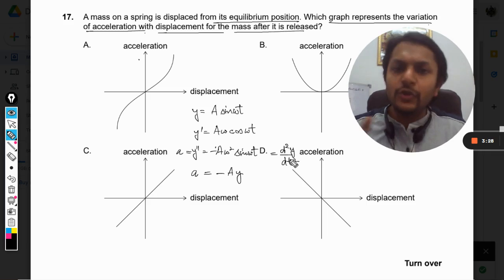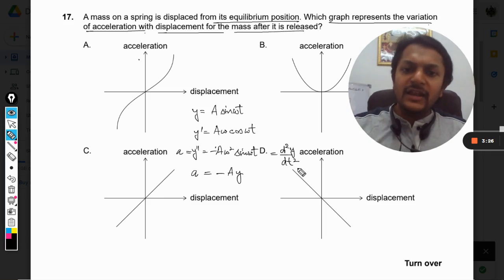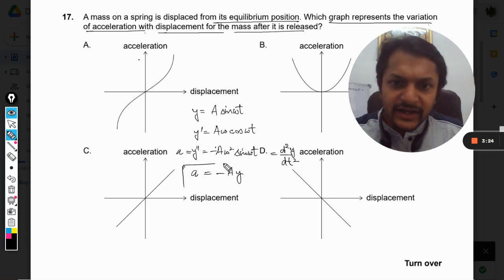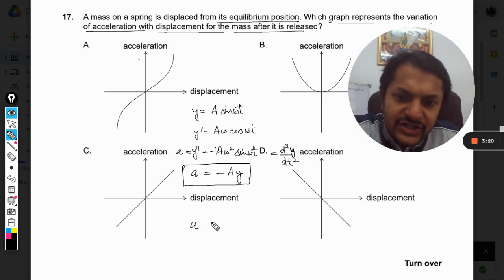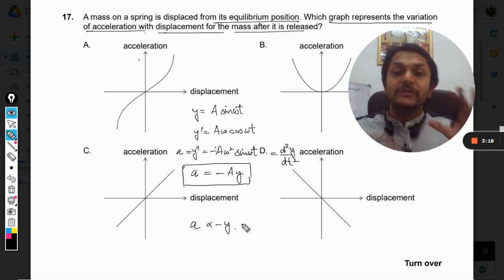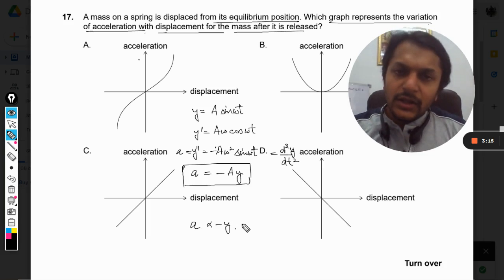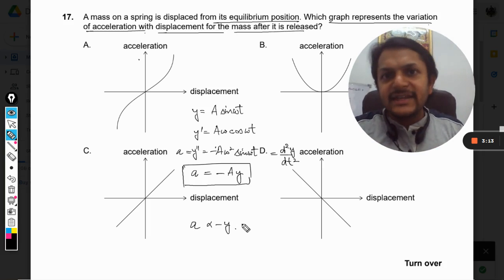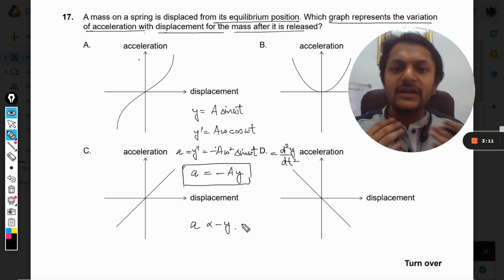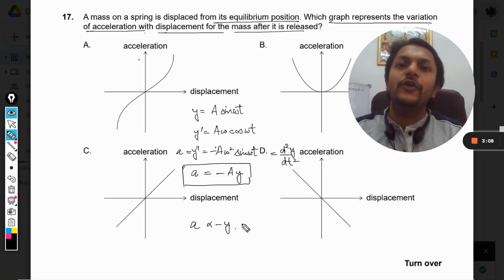Otherwise, you can directly go this way. You can see that the acceleration is directly proportional to negative of the displacement. Also, I can say that because the spring, it is understood that spring will be going for simple harmonic motion only.